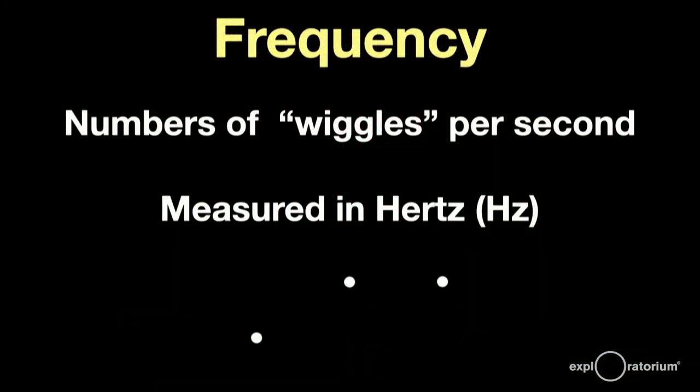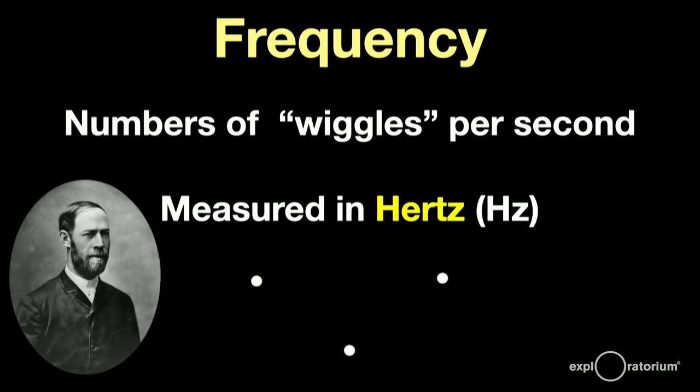Another jargon word we need to understand is frequency. The frequency is simply the number of wiggles per second that something is vibrating. The unit of frequency is the Hertz, abbreviated Hz, after Heinrich Hertz, who discovered radio waves. If something is vibrating at 10 Hertz, it's vibrating 10 times per second. The left dot has a lower frequency, the middle dot a medium frequency, and the right dot a higher frequency.